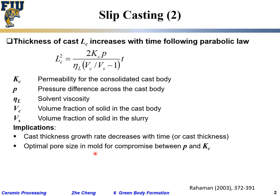You need an optimal pore size as a compromise between pressure difference and permeability. If pore size is too large, permeability is high which helps, but you cannot maintain a large enough pressure difference. In the extreme case of a fully open pore, you have no pressure difference at all. So pore size should not be too large — and if too small, no liquid can pass through and permeability suffers.